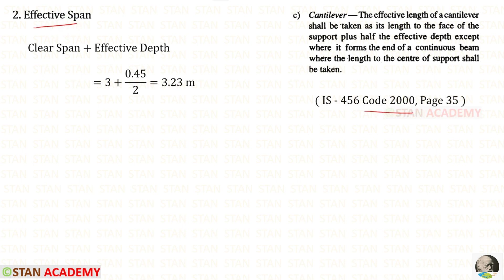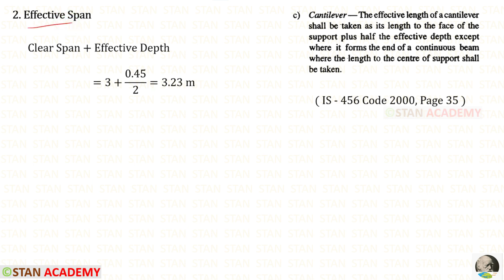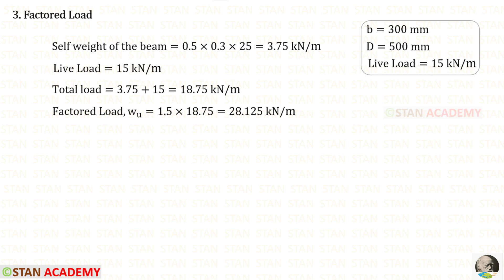The code states that the effective length of a cantilever shall be taken as its length to the face of the support plus half the effective depth. The clear span is 3 meters and the effective depth is 450 millimeters, which is 0.45 meters. Therefore, the effective span is 3 plus half of 0.45, giving 3.225 meters. The next step is to find the factored load.